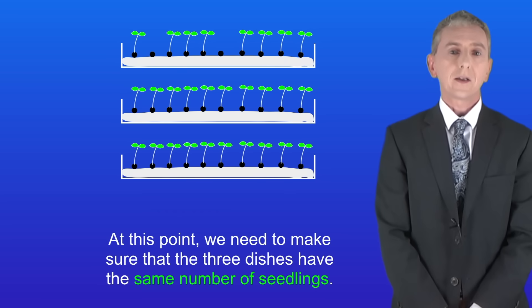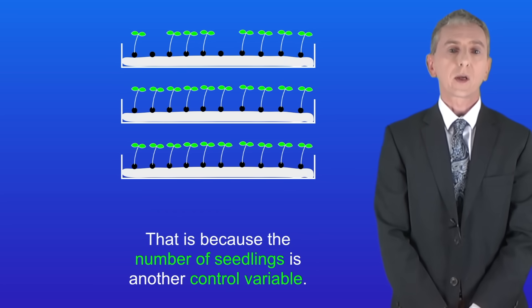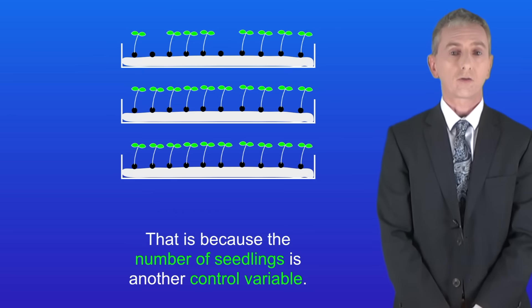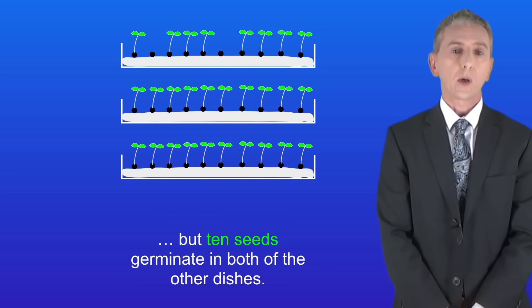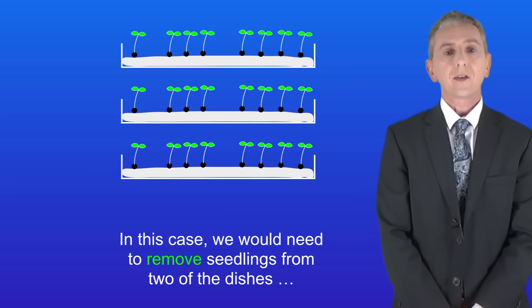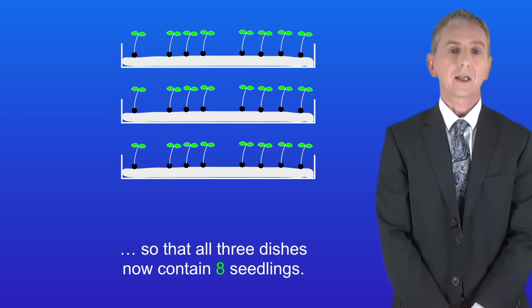At this point we need to make sure that the three dishes have the same number of seedlings, and that's because the number of seedlings is another control variable. For example, imagine that only eight seeds germinate in one of the dishes but 10 seeds germinate in both of the other dishes. In this case we'd need to remove seedlings from two of the dishes so that all three dishes now contain eight seedlings.